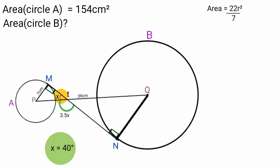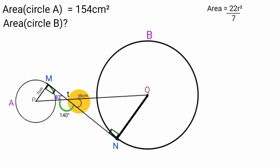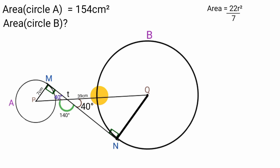Substituting X equals 40 degrees, this angle is 40 degrees. And 3.5X equals 3.5 times 40 degrees which is 140 degrees. Recall we noted that this angle and its opposite angle are equal, so that angle is also 40 degrees. To find line QT, since we have the length of this side as 7 cm and this angle as 40 degrees, we can find the length of line PT and subtract it from 39 cm to get the length of line QT.